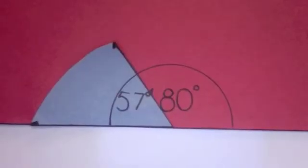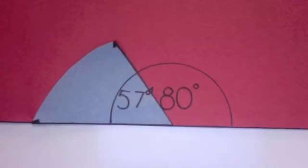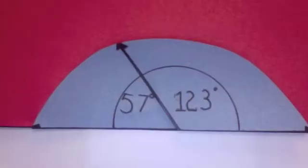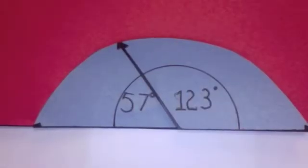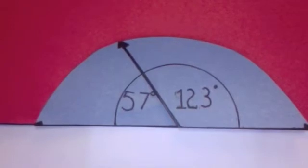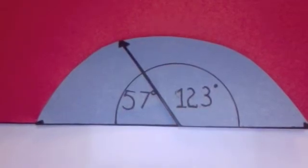If we take our 57 degree angle and add in our 123 degree angle, we can see that these two angles make up a 180 degree angle. That shows that these angles are supplementary to one another.